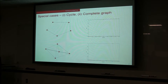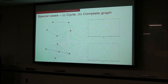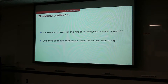Any questions? One clarification: we are focused on undirected graphs with no self-loops. Next, I'll introduce another very important statistical property called the clustering coefficient. There are a number of clustering coefficients, and they give a measure of how well nodes in the graph are clustered together. Social networks tend to exhibit clustering, so this network property is of great interest.